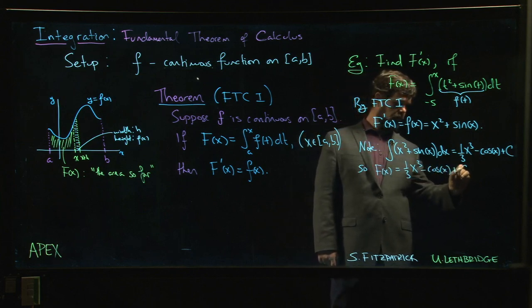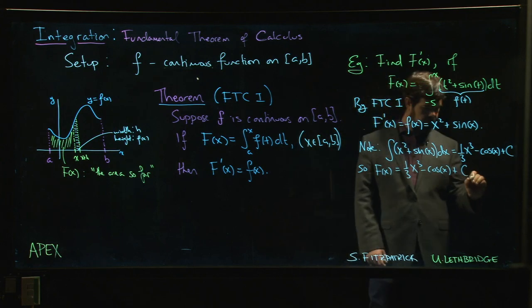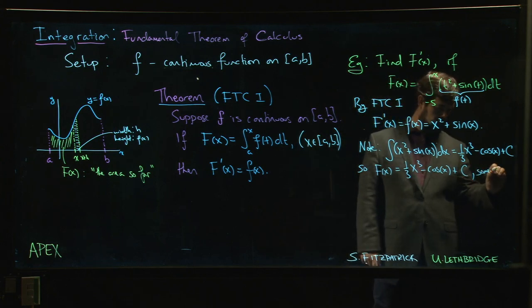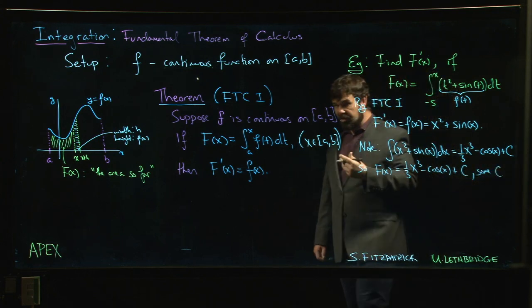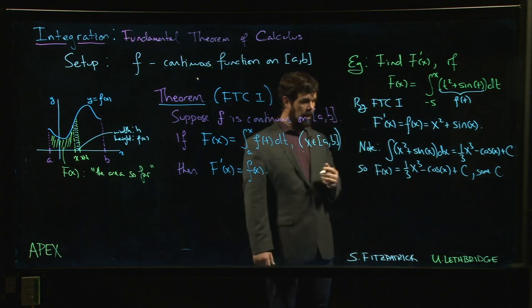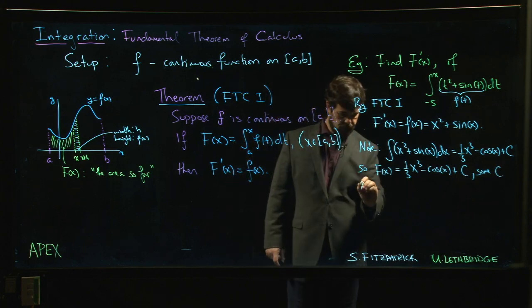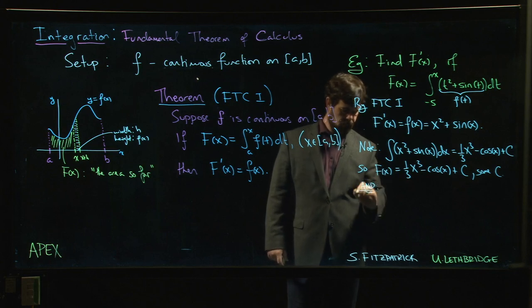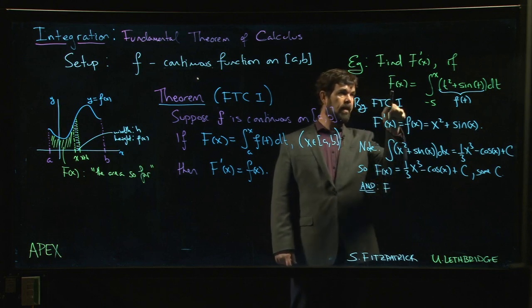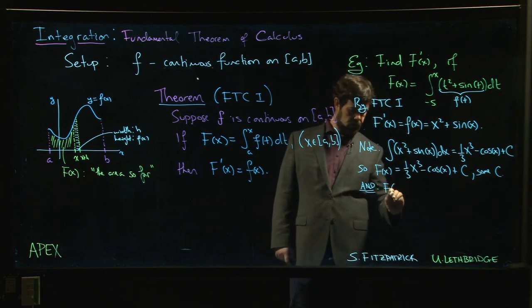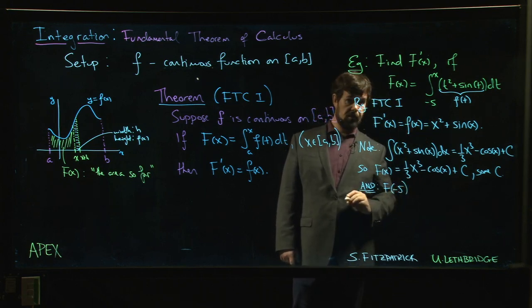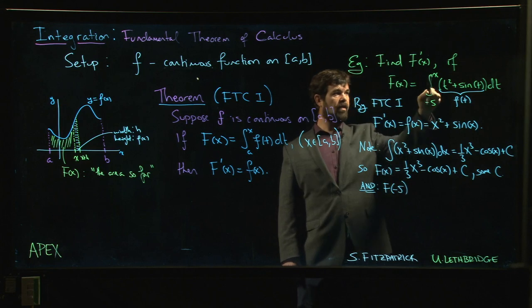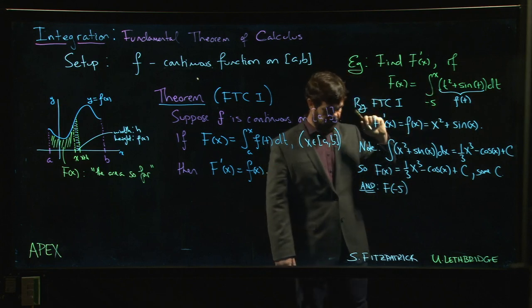And in fact, you can even figure out what c is if you're so inclined, because big F at minus five has to be zero—integral from minus five to minus five is zero.